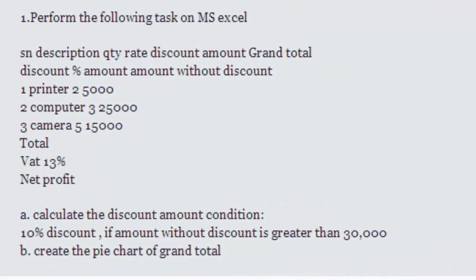That was the first part of the question — to calculate the discount amount for the given condition. Now the second part: question B asks to create a pie chart of the grand total.